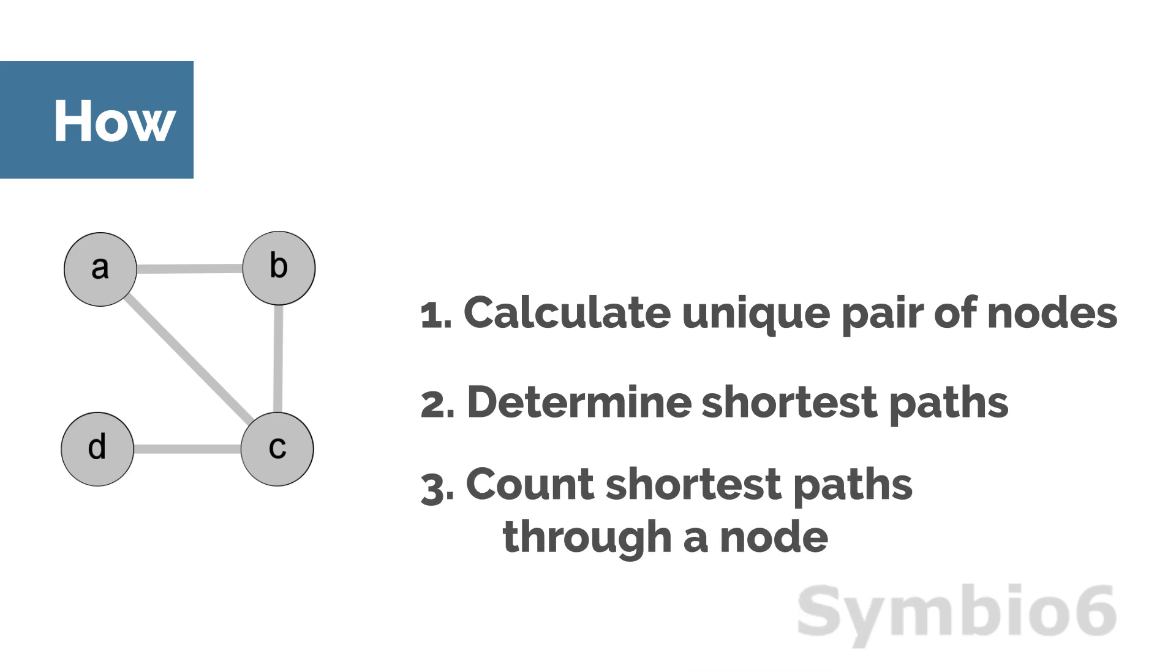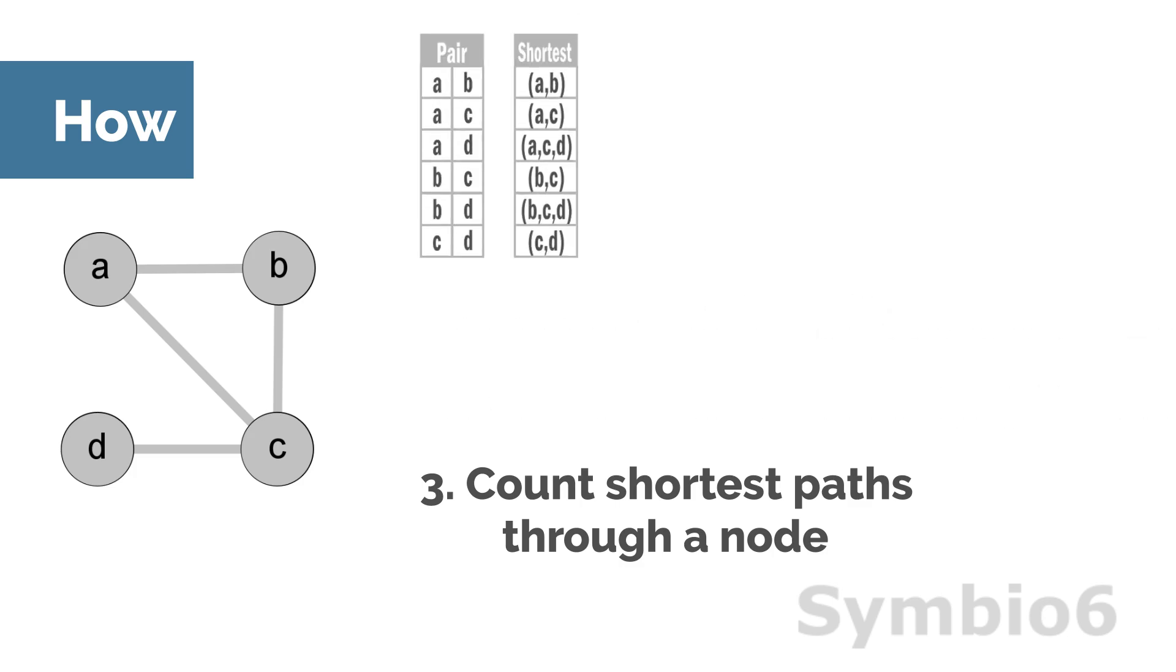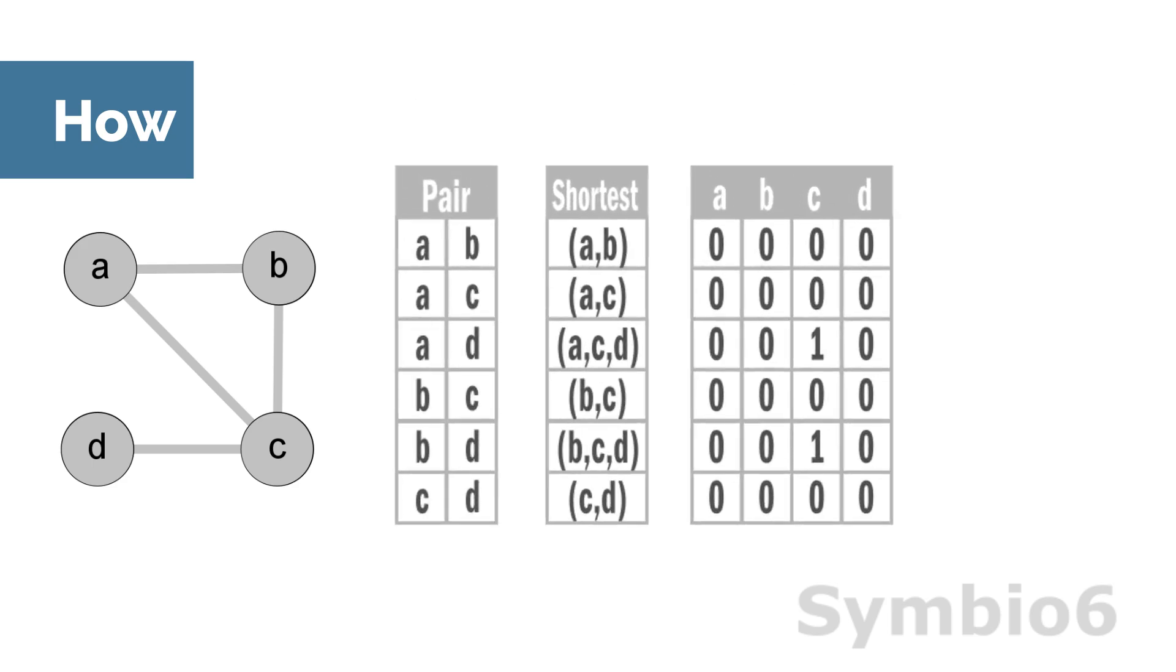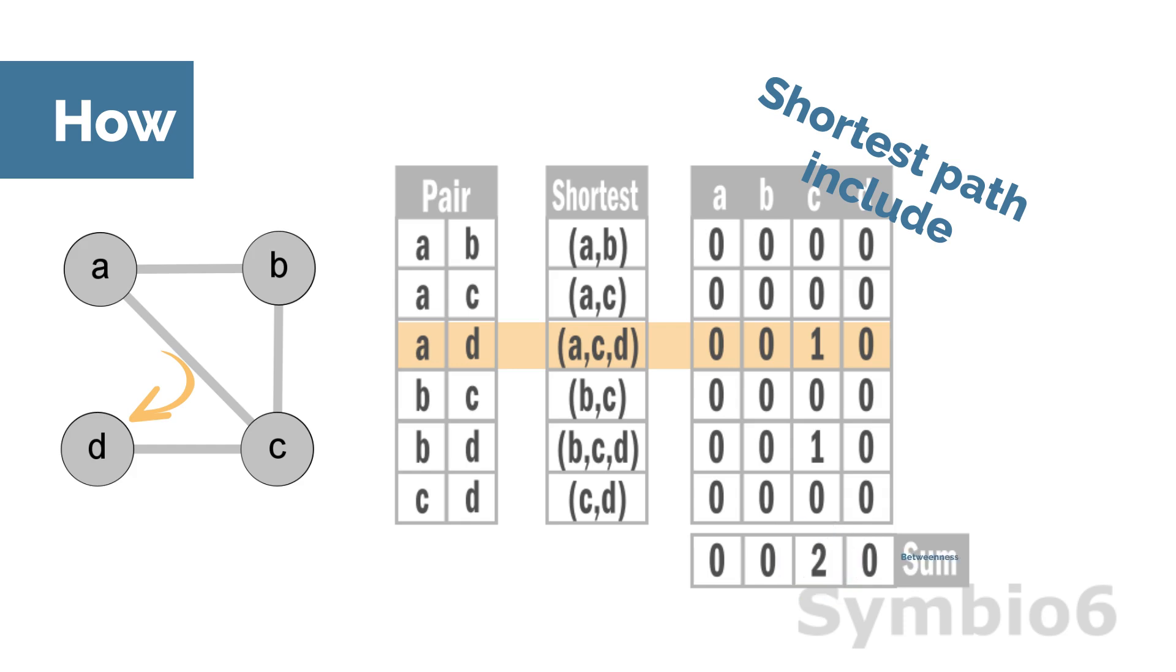Now we can calculate the betweenness centrality. The shortest path between A and D is a walk through node C. So, this shortest path only contains node C, which we annotate in the table. The sum of column C counts the number of times the shortest paths pass through C.